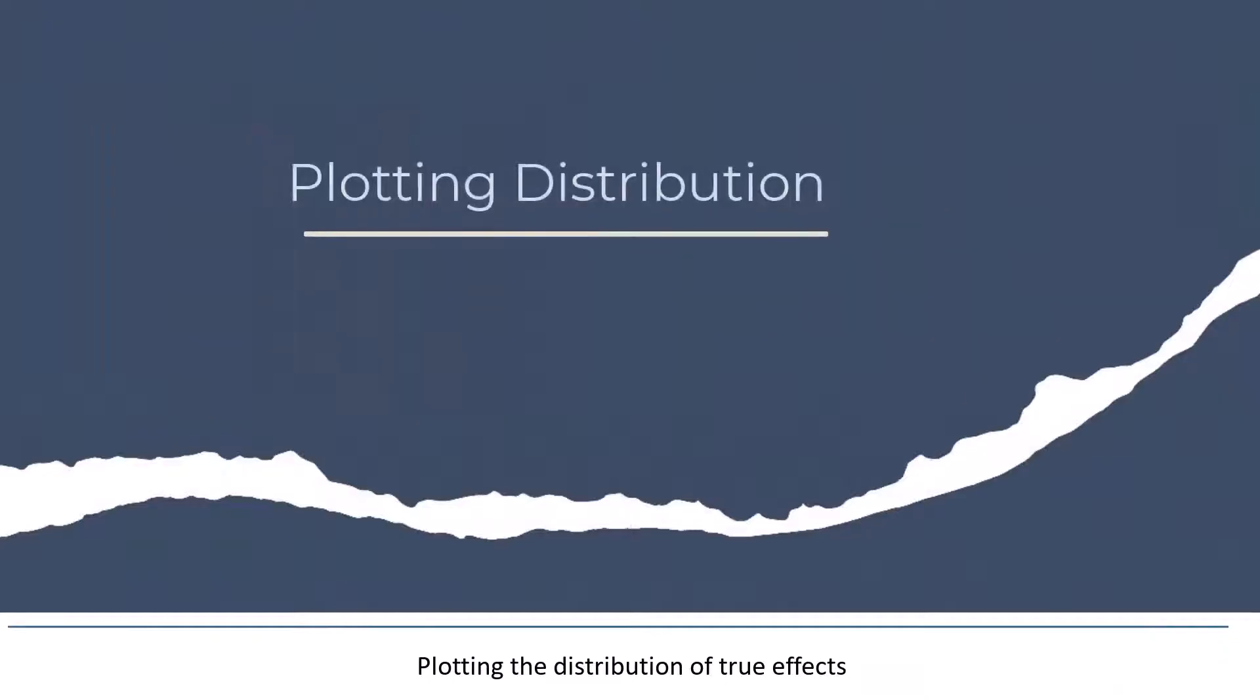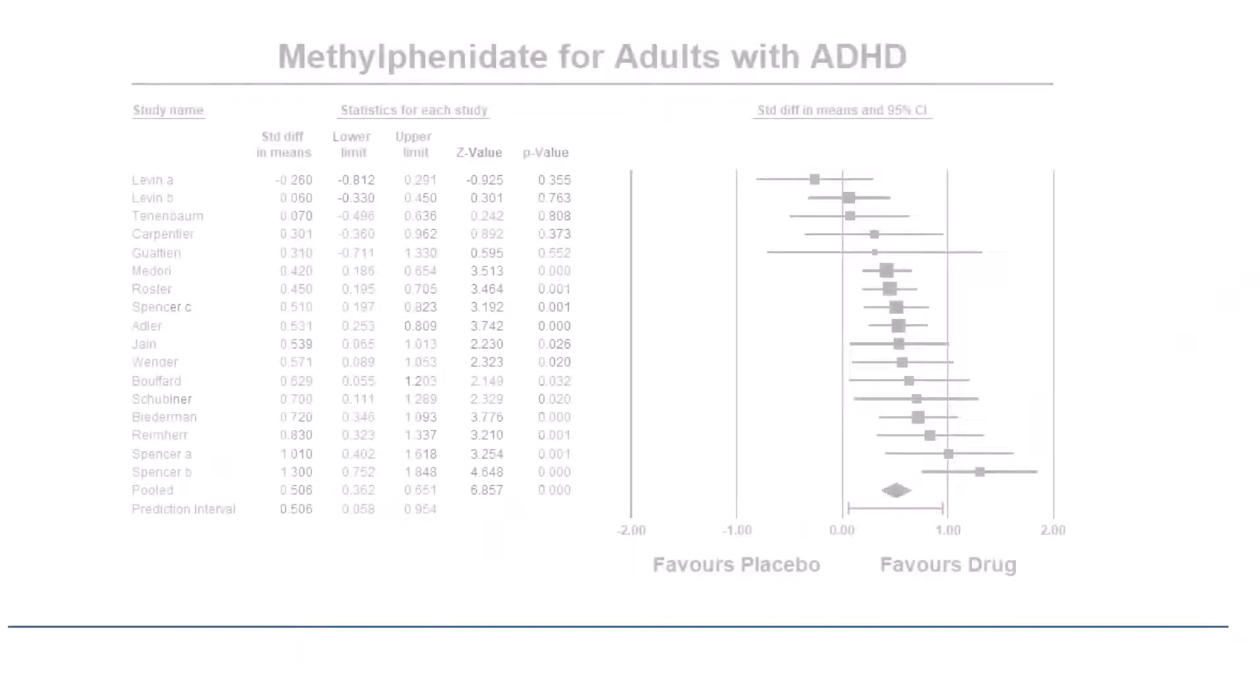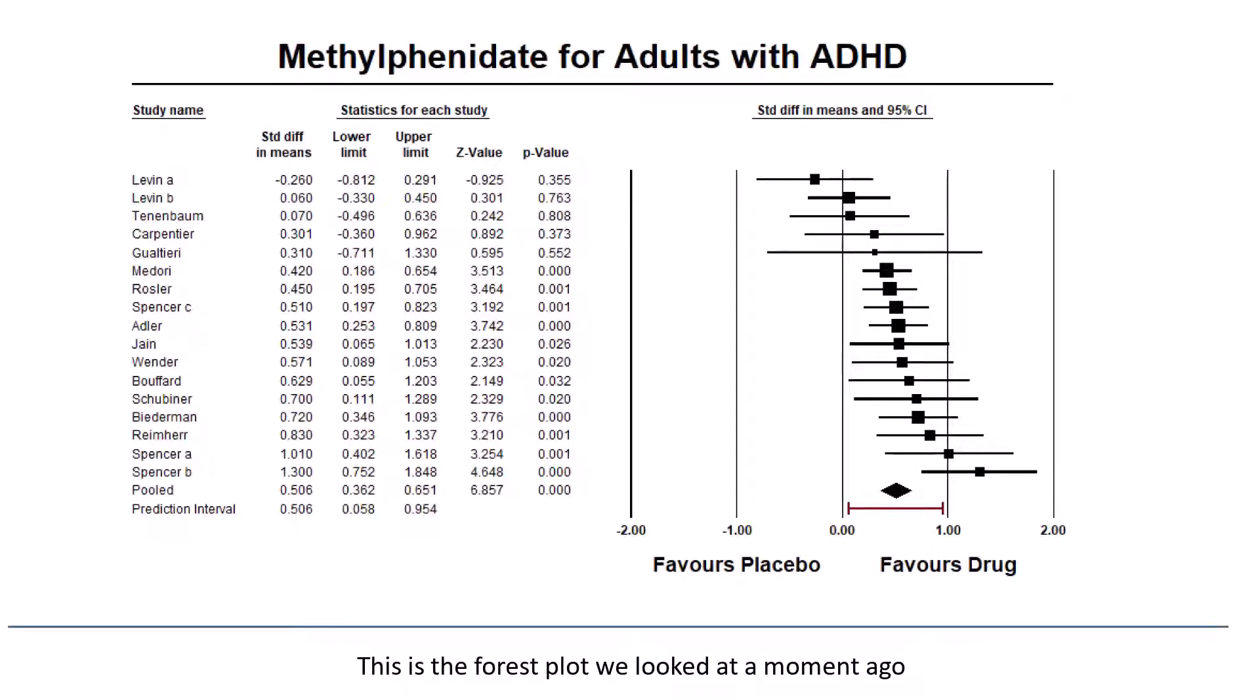Plotting the distribution of true effects. This is the forest plot we looked at a moment ago. This line reflects the mean effect size and its confidence interval, while this line reflects the prediction interval or the dispersion in effects. In any single population, the true effect size could fall anywhere from here to here.